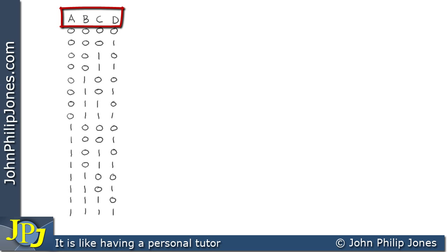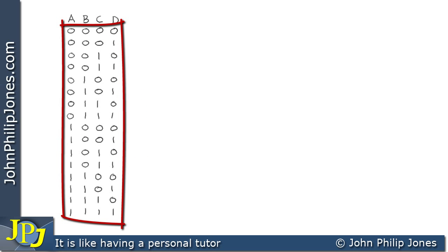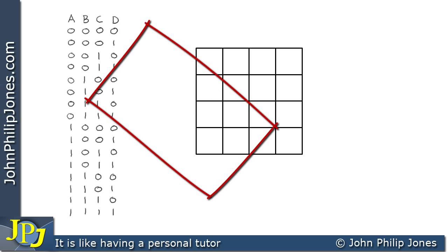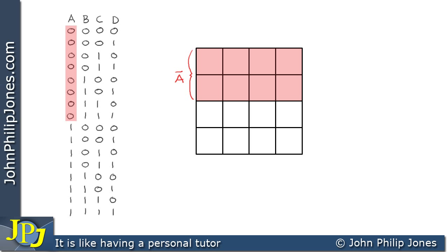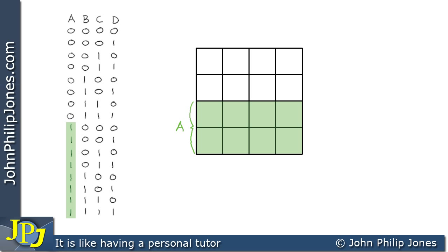Here we can see we have four boolean variables: A, B, C and D. Now with four boolean variables we can have 16 combinations, as you can see here. 16 combinations means we need a Karnaugh map with 16 squares, as you can see here. Now we can see that A is a 0 on 8 occasions and this equates to not A. So we can see we've labelled the map with not A, and we can see that there are eight areas of the map corresponding to not A. A is also a 1 on 8 occasions, so you can see the map sets aside eight squares to represent these eight 1s.